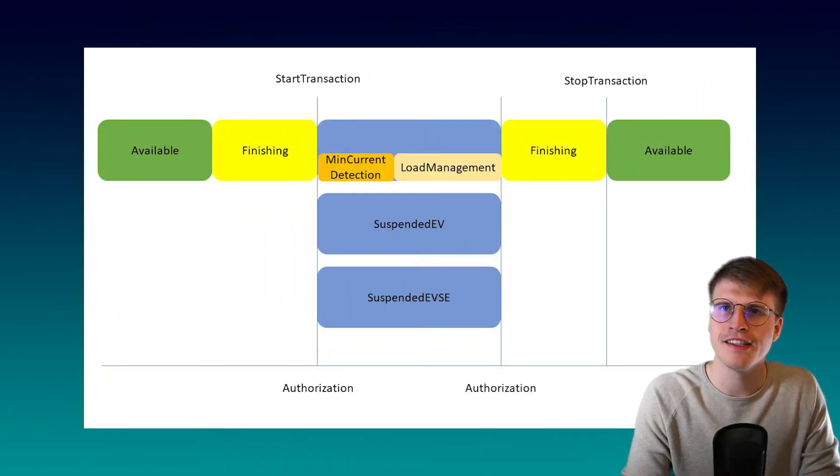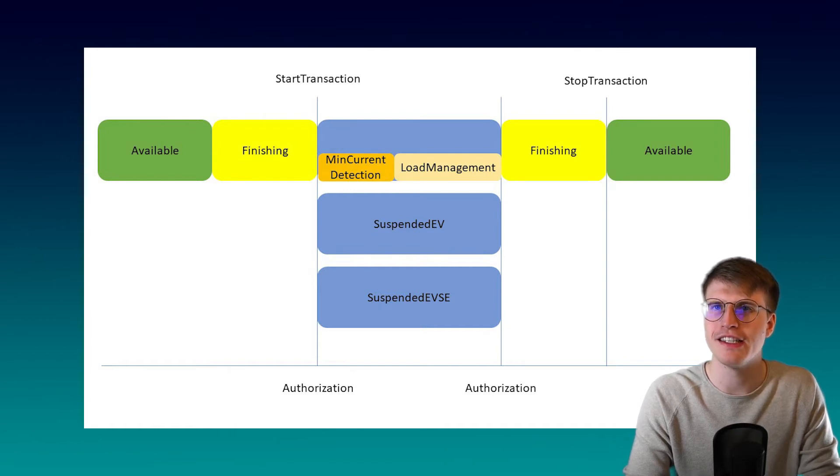First I would like to show you where the load management and the min-current detection take place. For this I brought this graphic with me. As you see, at the beginning of charging we are in the state available. If a user now comes to the charging pole and connects his car, the charging pole jumps to the preparing state. If the user is now logging in, a transaction is started and the charging pole goes to the charging state.